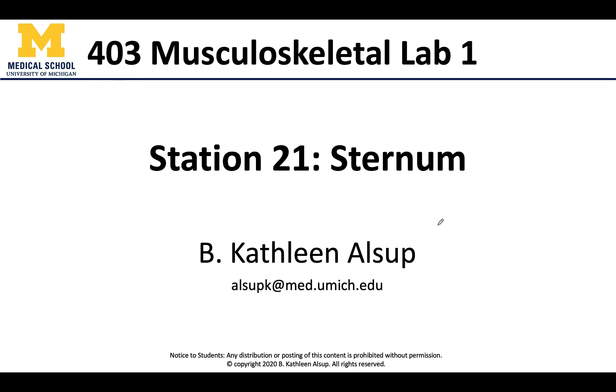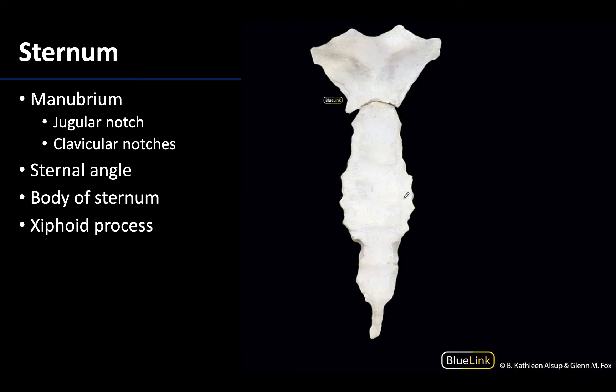Hello all, this is Dr. Alsup and welcome to Station 21, where we are really getting into the sternum and those structures that we want you to be able to identify for the lab practical. Recall that the sternum is going to be that breast bone — it's going to have articulations with the clavicle as well as the costal cartilages and through that the ribs. It runs right down the midline of the superior thorax and is composed of three parts.